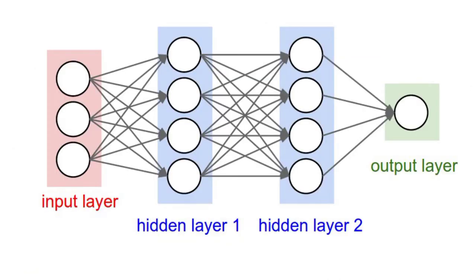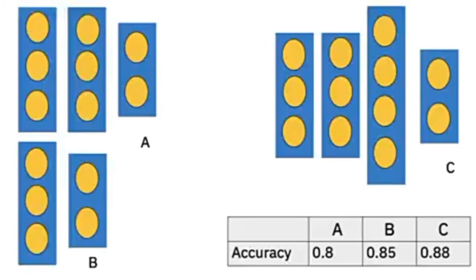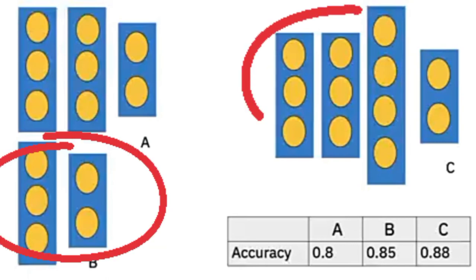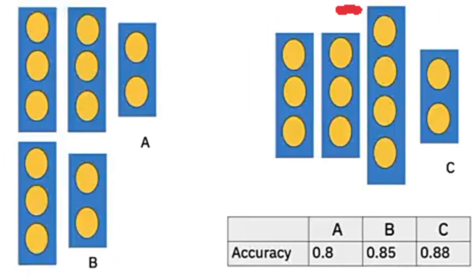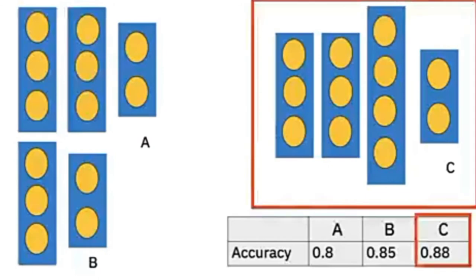One way to select a fully connected neural network architecture is to use the validation data. Consider the following network architectures: a, b, and c. We select the architecture with the best performance on the validation data, in this case c.